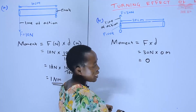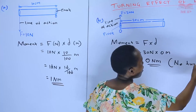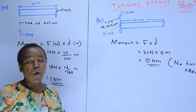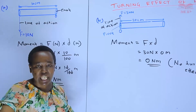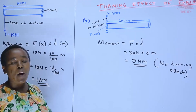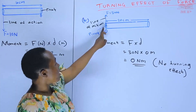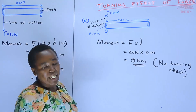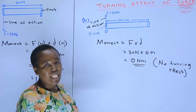Our moment will be zero Newton meters, meaning there is no turning effect. This can be seen when you apply force on the hinges of a door — nothing happens to the door. It will not open nor close, because the force is applied at the point of support, so the distance is zero and the moment is zero.